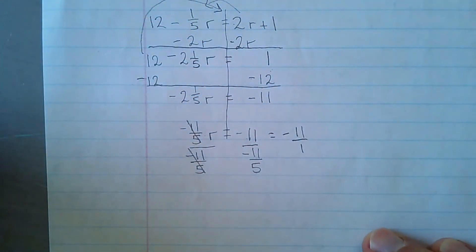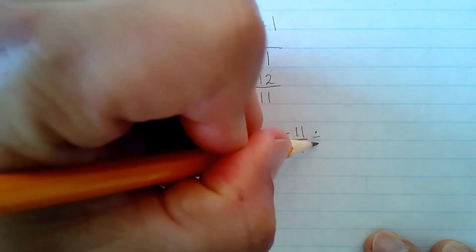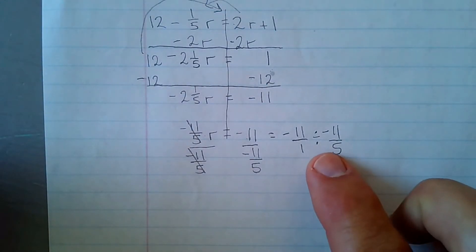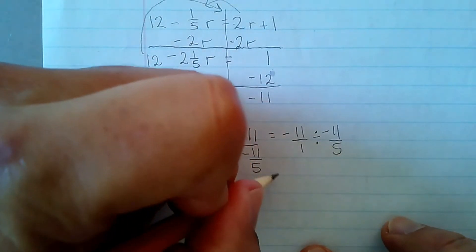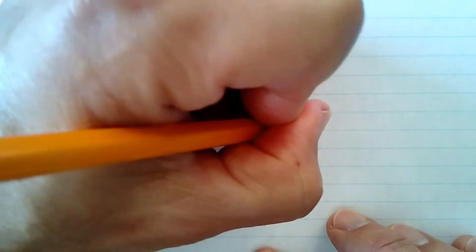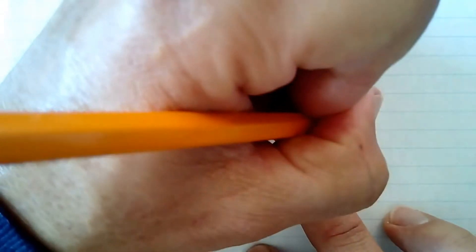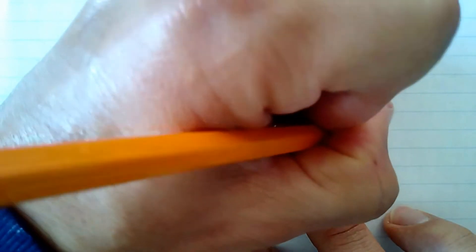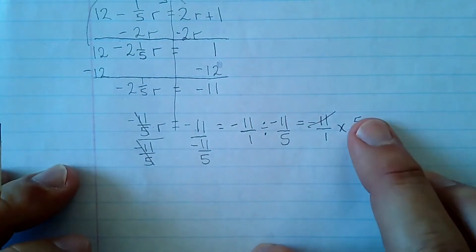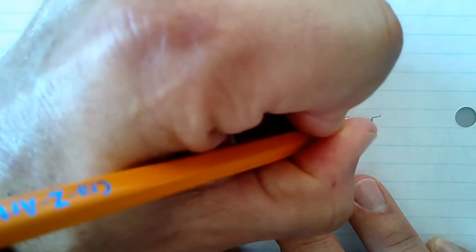Dog's barking. Nice. Negative 11 over 1 divided by negative 11 fifths. And, but remember you have to invert and multiply. So this is the same as negative 11 over 1 times the reciprocal of this, which is 5 over negative 11. And these will cross cancel nicely. All right. And really, I just have 5 over 1 as a result, which is equal to 5.